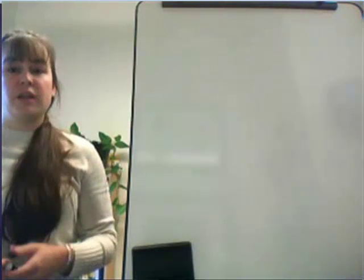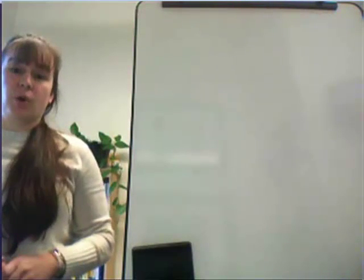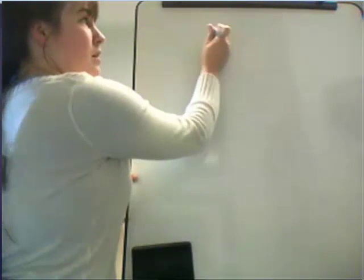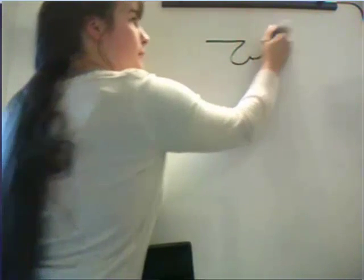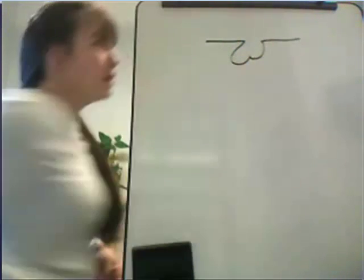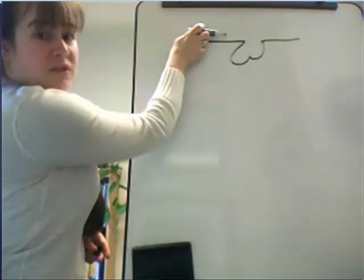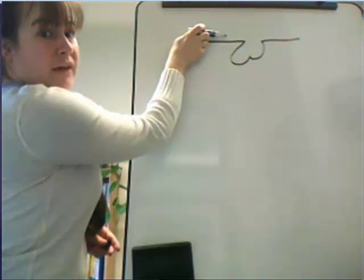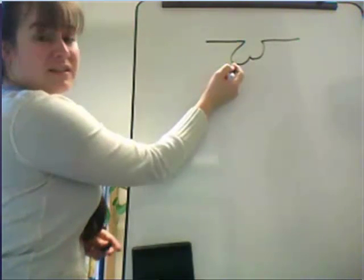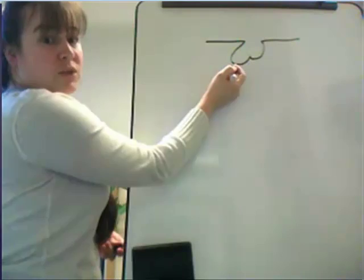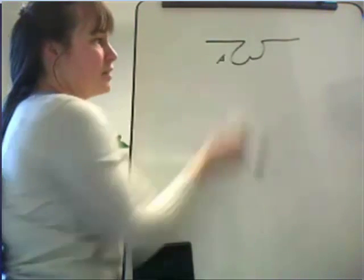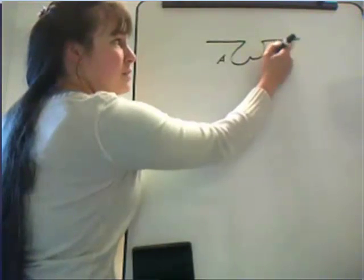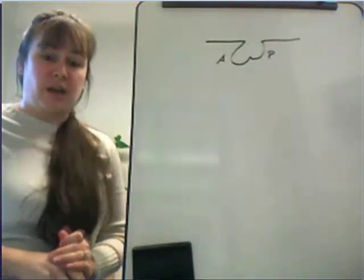We're going to diagram the thyroid hormones. In all of my illustrations, I begin with the floor of the hypothalamus and the pituitary. This represents the floor of the brain — the hypothalamus — and then this is the pituitary gland connected by an isthmus. This is the anterior aspect of the pituitary, and this is the posterior aspect of the pituitary.